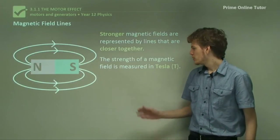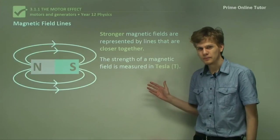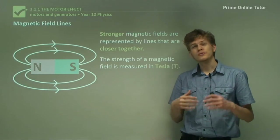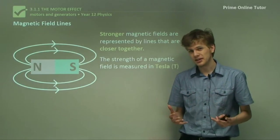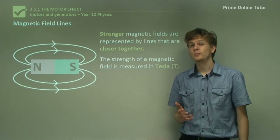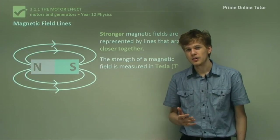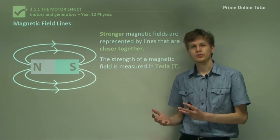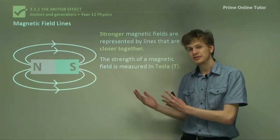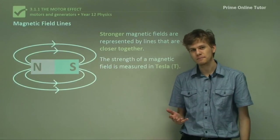Now a Tesla is actually a very, very large unit. A magnetic field of a single Tesla in strength is a very, very strong magnetic field indeed. Most of the magnetic fields you'll be working with will be measured perhaps in millitesla, which are thousandths of a Tesla.